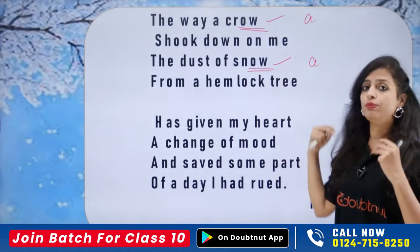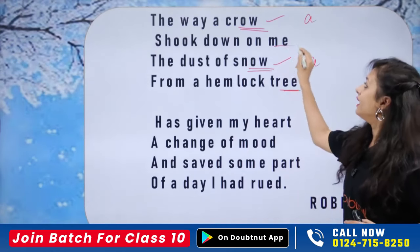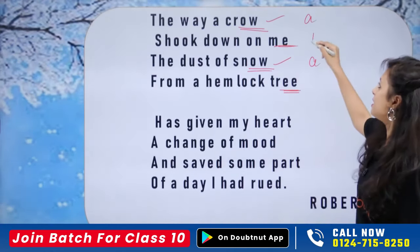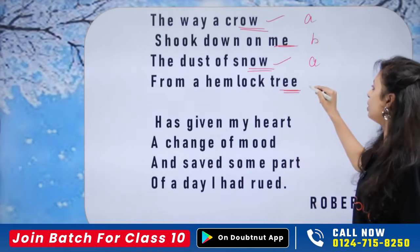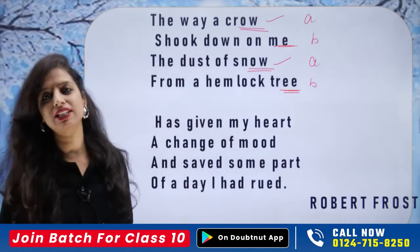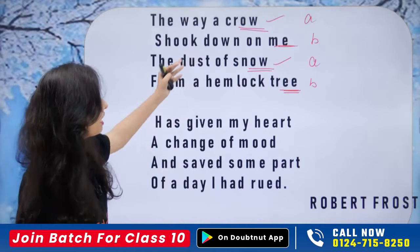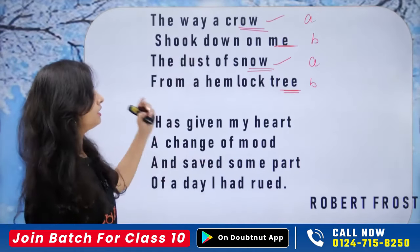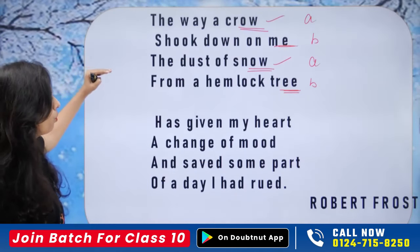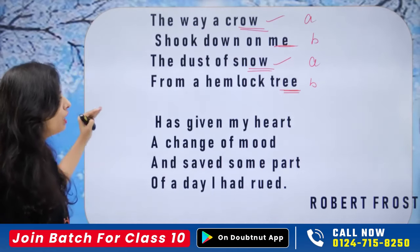Then we have 'shook down on me' — 'me' and 'tree' rhyme with each other. So the rhyming scheme here is A, B, A, B. That's how the rhyme scheme works — once you understand it, it stays with you forever. The poem reads: 'The way a crow shook down on me / The dust of snow from a hemlock tree.'